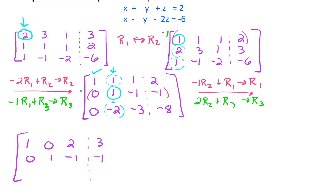For the bottom row, we want to get rid of that negative two. So let's go two times row two, add it to row three, and put the result in row three. We get zero, zero — which is what we wanted — then two times negative one is negative two plus negative three is negative five, and negative two plus negative eight gives negative ten. Our first and second columns are all set.